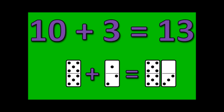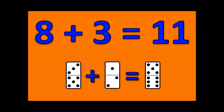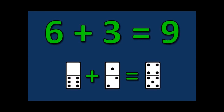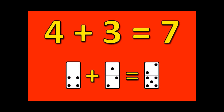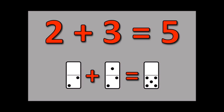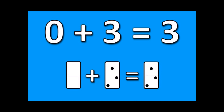Ten plus three is thirteen. Nine plus three is twelve. Eight plus three is eleven. Seven plus three is ten. Six plus three is nine. Five plus three is eight. Four plus three is seven. Three plus three is six. Two plus three is five. One plus three is four. Zero plus three is three. That's it.